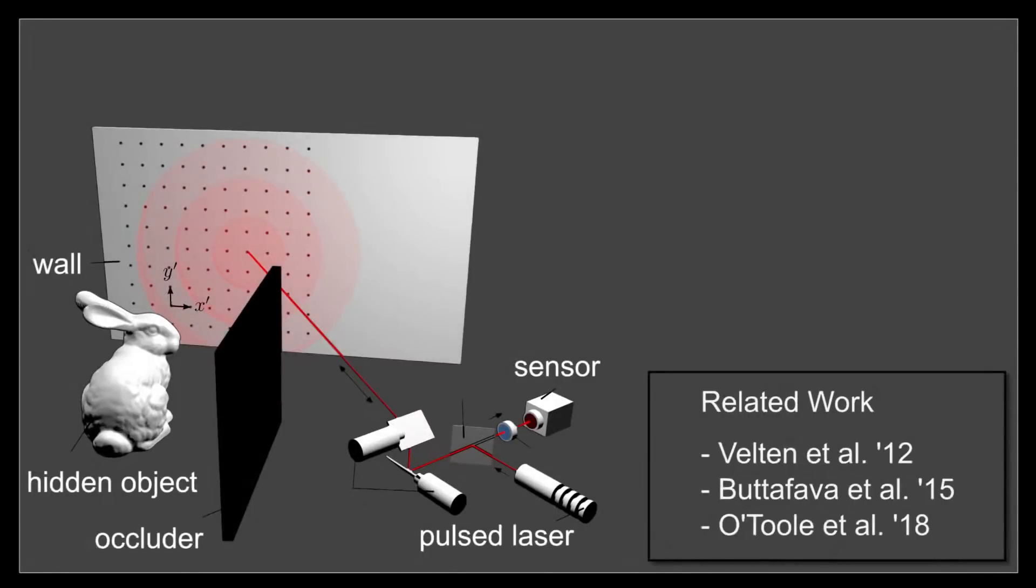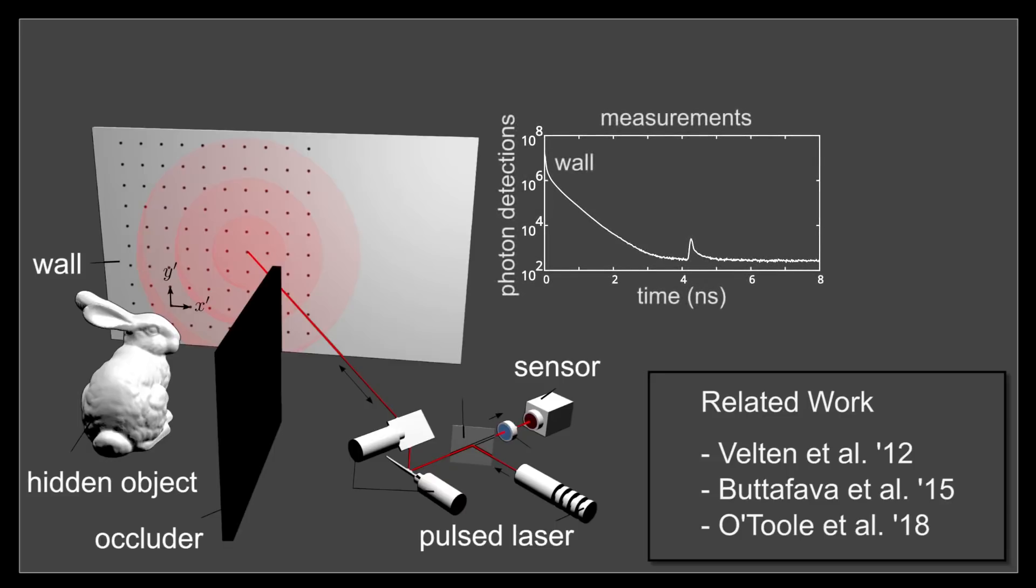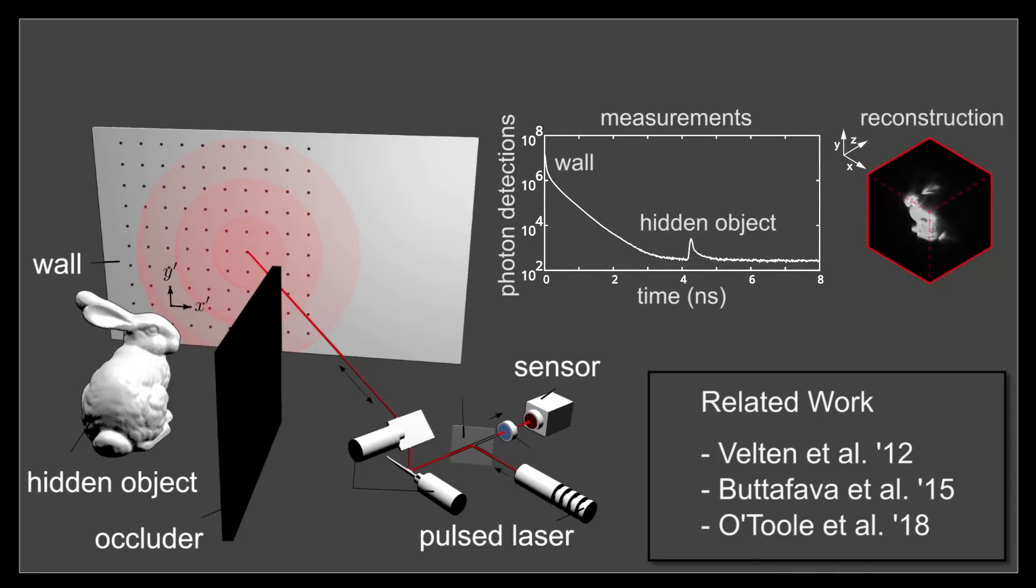Recent approaches to solving this challenging problem employ optical time-of-flight imaging systems with highly sensitive time-resolved photodetectors and ultra-fast pulsed lasers. The sensor measures the time for light from a laser pulse to propagate to a wall, around the corner to a hidden object, and back. Reflected photons are captured over time, and by scanning multiple wall locations, the 3D geometry of the hidden object can be recovered.